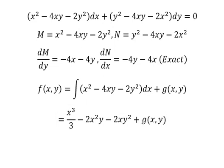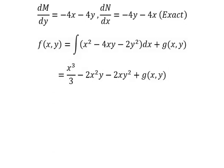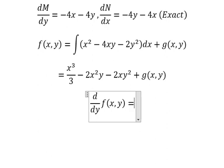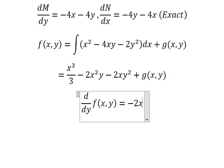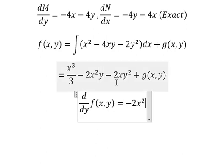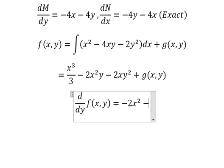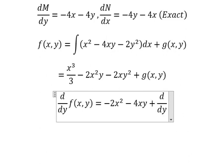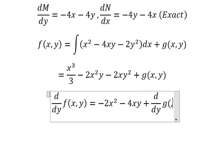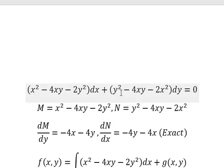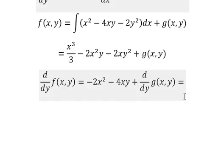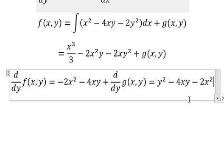Then we can do the first derivative of f with respect to y. This one we got number zero, this one we have number one, this one we have 2y so we have number two, and we have number four. And we know that this one equals to this one, so we simplify both sides and we got y squared.